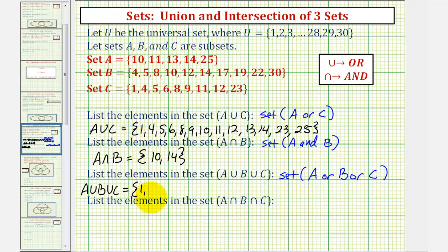So we'll start with one, next we have four, five, six, none of the sets have seven, but we have eight, nine is in C, ten is in B, eleven is in A and C, twelve is here, thirteen is in A, we have fourteen, fifteen is not in any of the sets, neither is sixteen, but here we have seventeen, eighteen is not in any of the sets, we have nineteen, there's no twenty, there's no twenty-one, we have twenty-two and twenty-three, and then we have twenty-five and thirty.